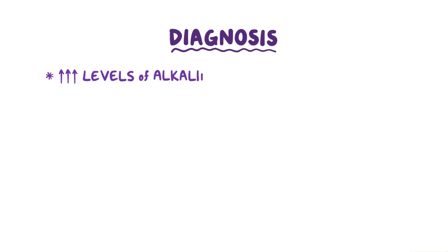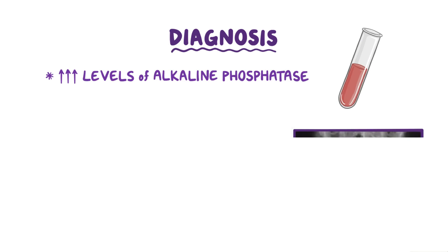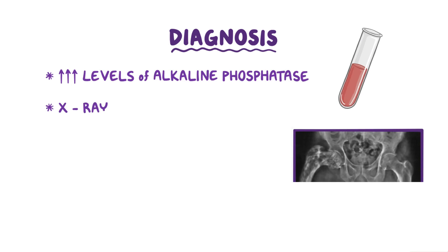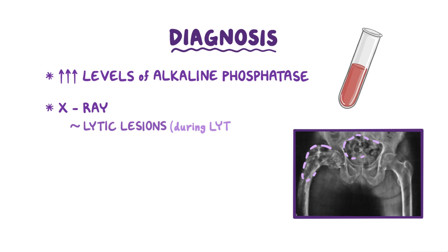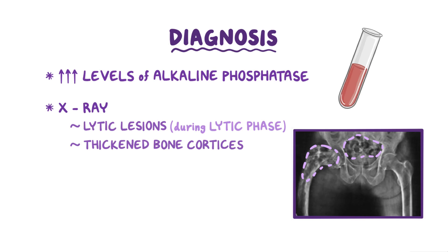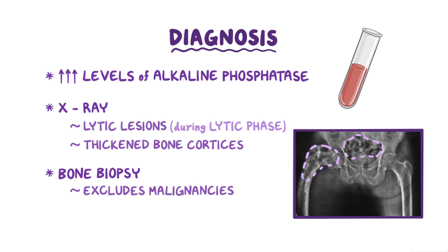The diagnosis of Paget's disease of bone is usually done by checking for elevated levels of alkaline phosphatase. In addition, an X-ray might show lytic lesions during the lytic phase of the disease, or thickened bone cortices in advanced cases. Finally, a bone biopsy is usually done to exclude malignancies, which can mimic some of the findings of Paget's disease of bone.